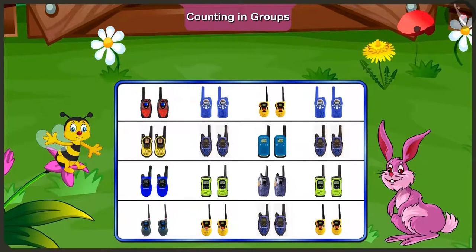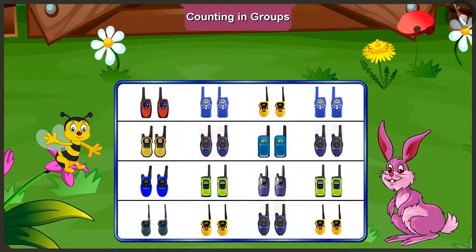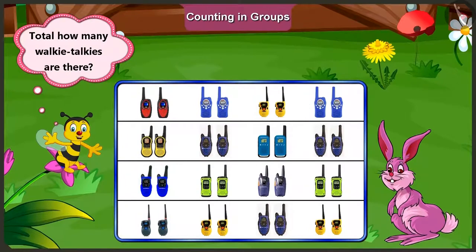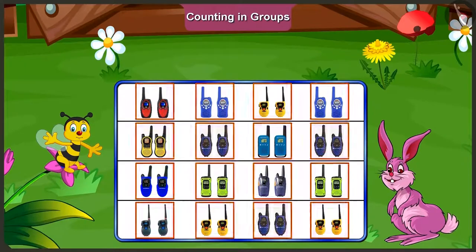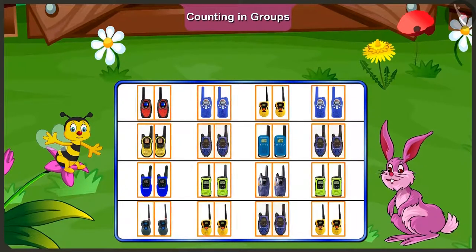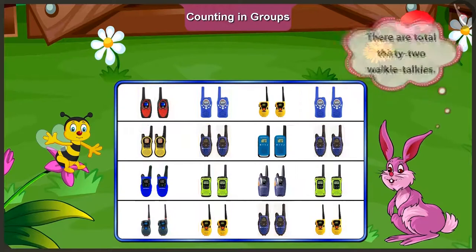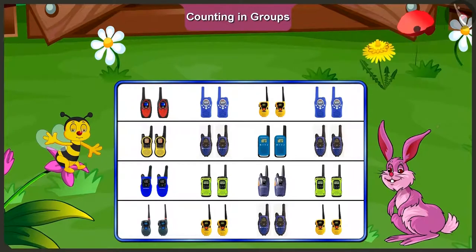Bunny, now tell us: if there are sixteen pairs of walkie-talkies, then how many walkie-talkies are there in all? There are sixteen pairs and every pair has two walkie-talkies, which means there is a total of thirty-two walkie-talkies. Well done, Bunny!